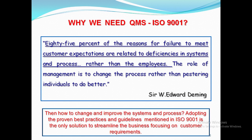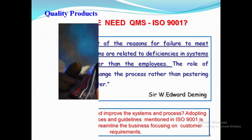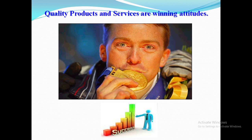Why we need ISO 9001? World famous management system consultant Sir Edwin Deming did a survey among big companies around the world and found out that 85% of the reasons for failure to meet customer expectations are related to deficiencies in systems and processes rather than the employees. He suggested that the role of management is to change the process rather than blaming and pestering employees to do better. Adopting the proven best practices and guidelines mentioned in ISO 9001 is the only solution to streamline the business focusing on customer requirements. Quality products and services are winning attitudes.